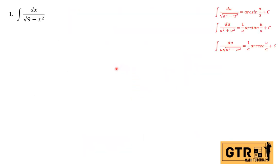Number one. We have the integral of dx over the square root of 9 minus x squared. Which of the three formulas are we going to use? Here 9 is the a squared, the constant. So we will use the formula du over the square root of a squared minus u squared. Since a squared equals 9, we get the square root, so a equals 3.